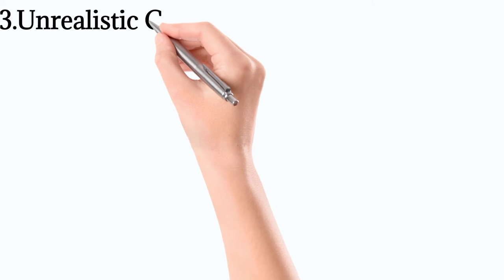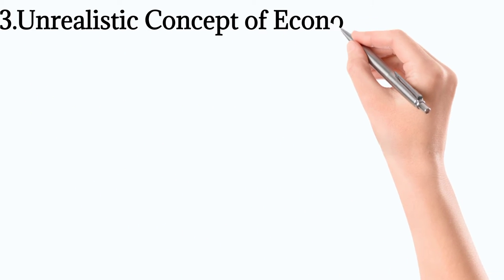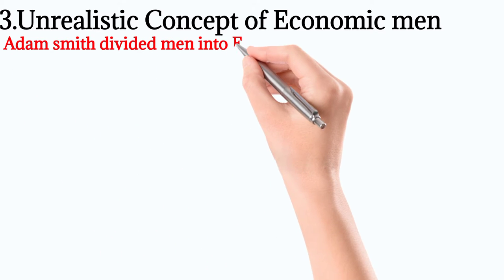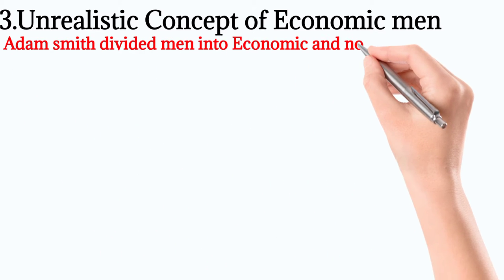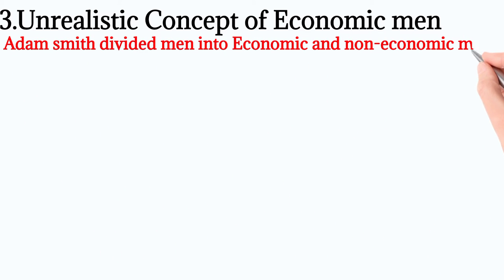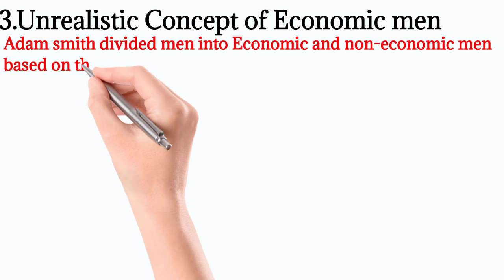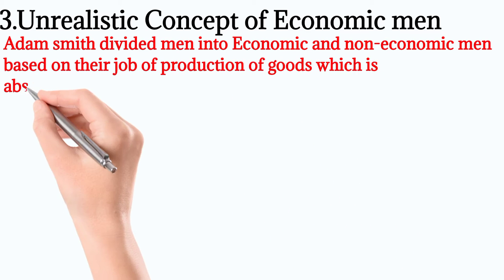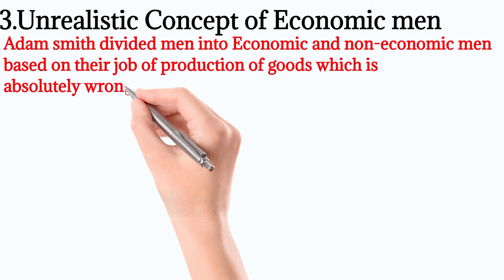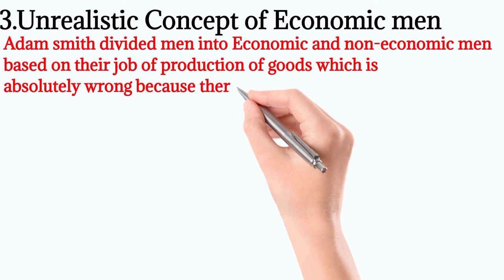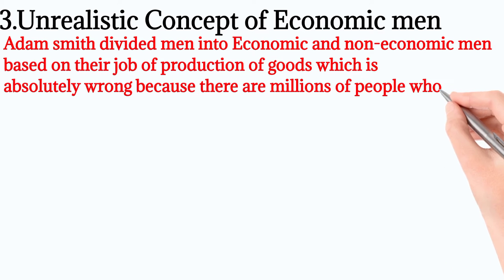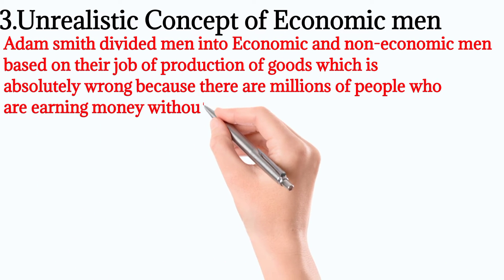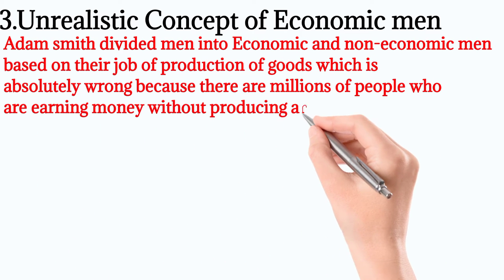Number 3: Unrealistic concept of economic men. Adam Smith divided men into economic and non-economic men based on their involvement in the production of goods, which is absolutely wrong — because there are millions of people who are earning money without producing anything.